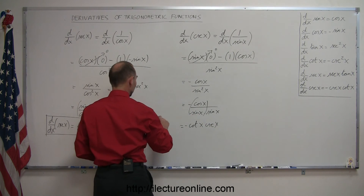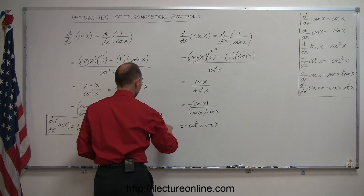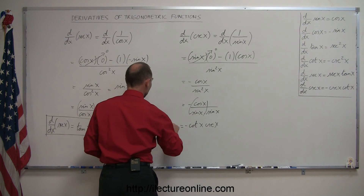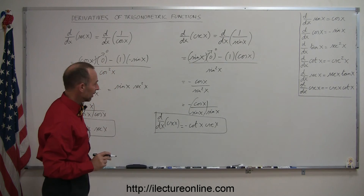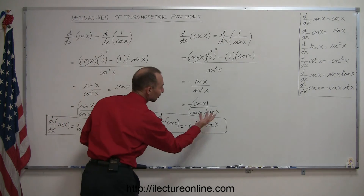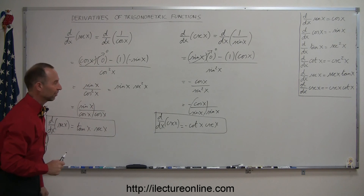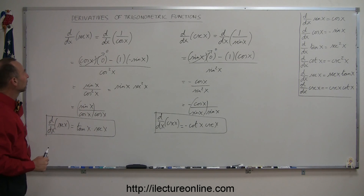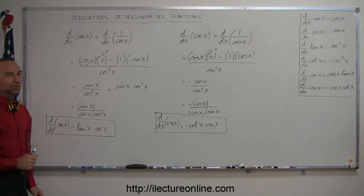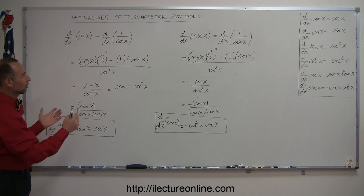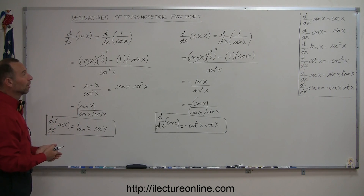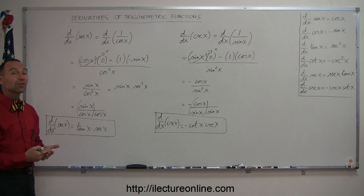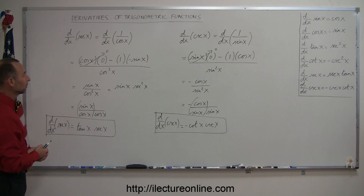So the d/dx of cosecant of x equals negative cotangent of x times cosecant of x. Note that this has the same structure as the secant derivative, just with these factors in reverse order — which doesn't matter. And that's how you take the derivative of secant of x and cosecant of x. Next, we'll put it all together and show some examples with trigonometric functions in various combinations.